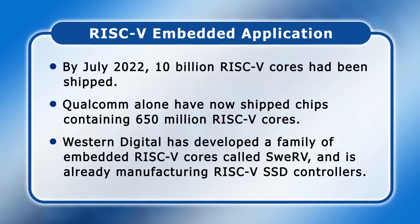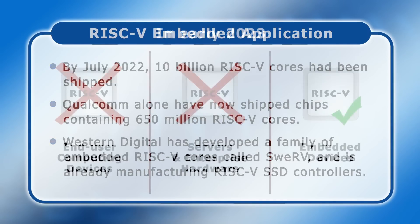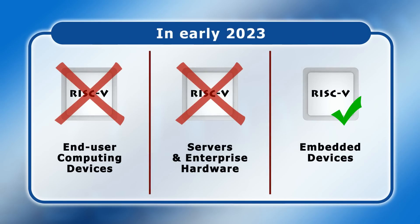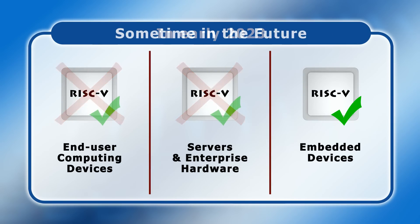As all of these examples demonstrate, RISC-V is already an important and growing embedded processor technology. So, in 2023, we should not be asking if RISC-V is going to be a success, because it already is, but whether that success can extend from embedded to end-user and server computing.